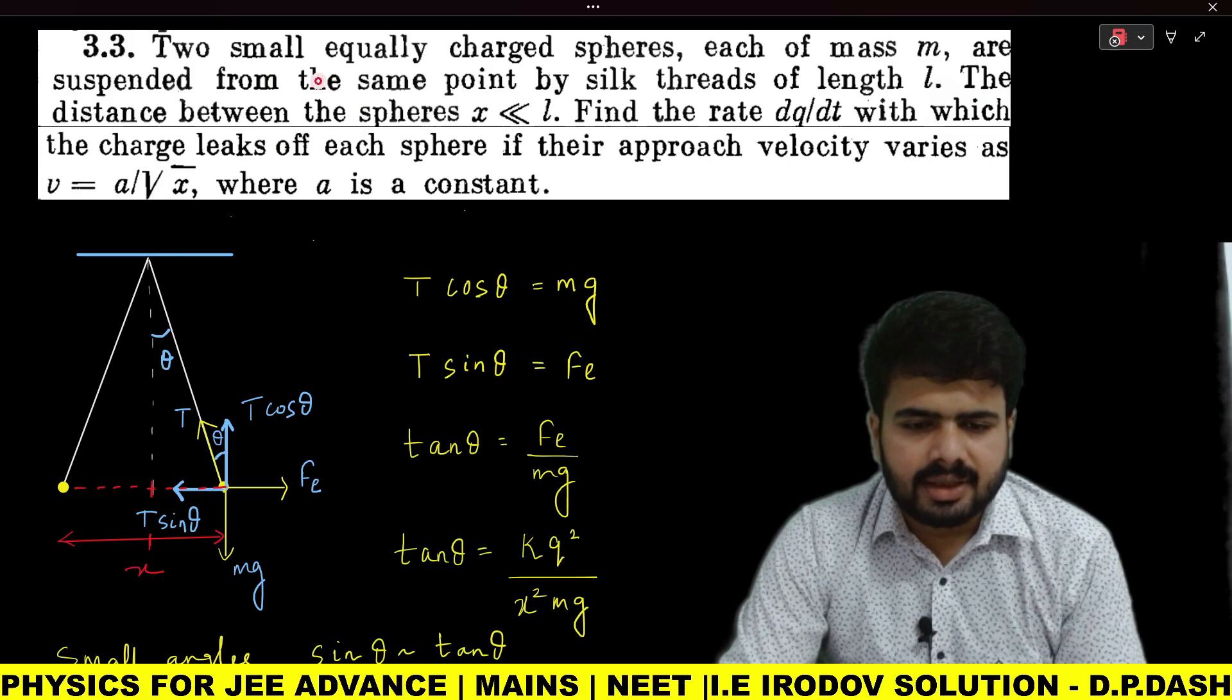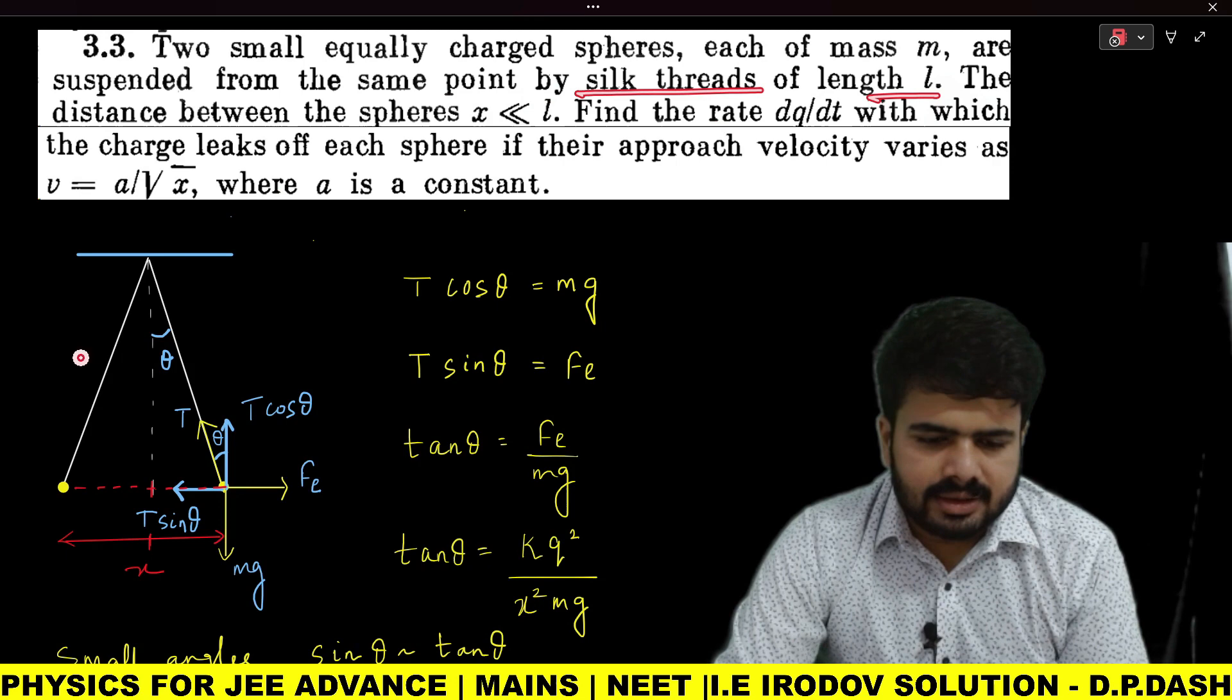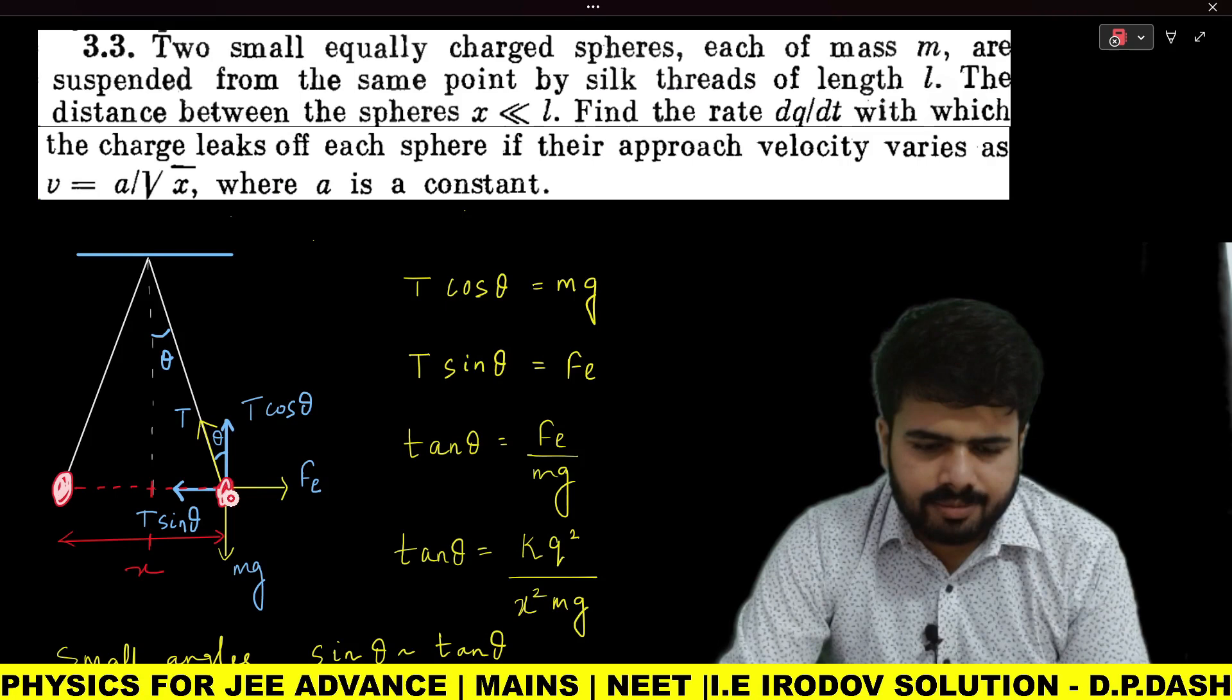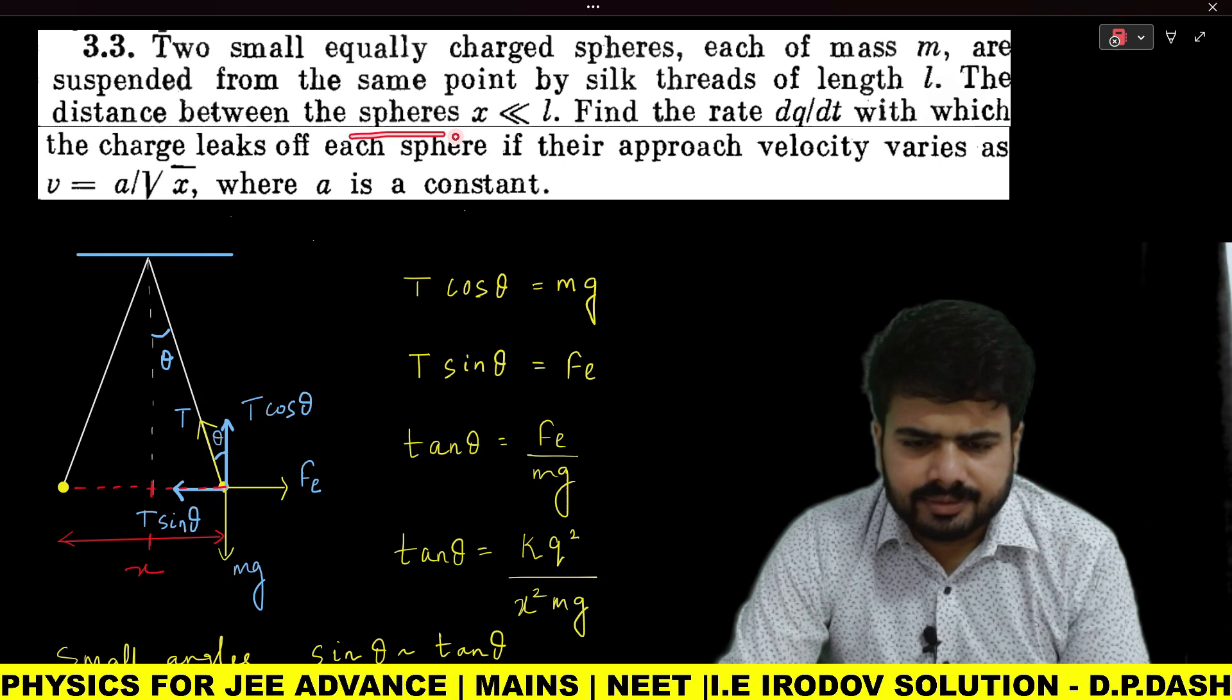Question number 3.3 is very important. It is given that you have two equally charged spheres, each of mass m, suspended from the same point by a silk thread of length l. Here you can see two spheres are present, each identical, having the same mass and same charge.